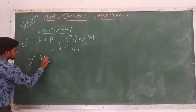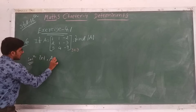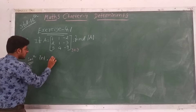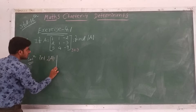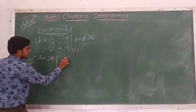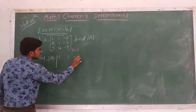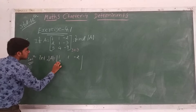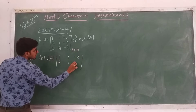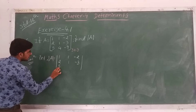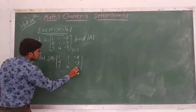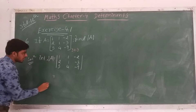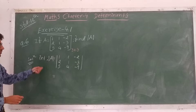Let A be equal to the determinant form. So determinant of A is equal to: row 1: 1, 1, -2; row 2: 2, 1, -3; row 3: 5, 4, -9. Now we have to solve this determinant.